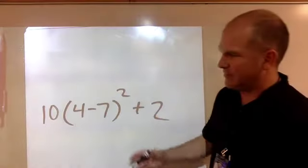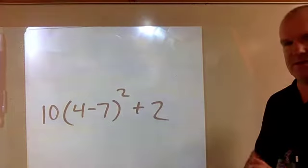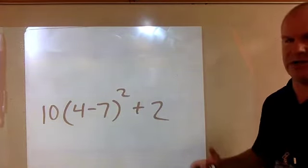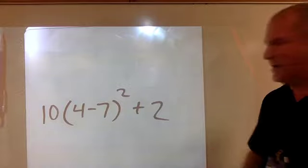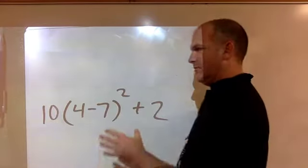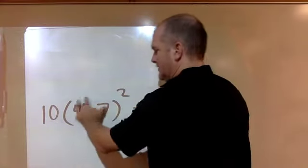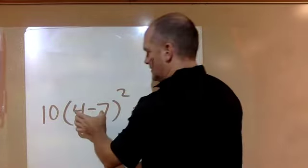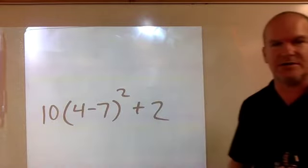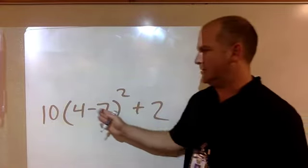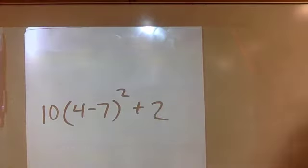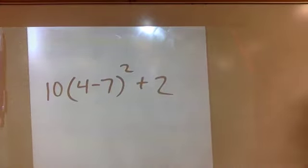You want to follow order of operations, and parentheses is the first one. So you're on the right track if you want to distribute because you're trying to get rid of your parentheses, but really parentheses means do everything you can inside the parentheses first. And you can do 4 minus 7 because those are like terms. So that's what you want to do first here. Parentheses means do what's inside the parentheses.